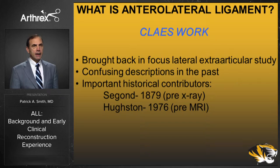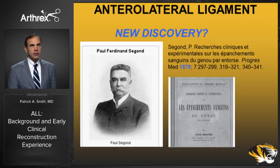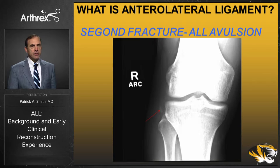First would be Segond in 1879 who described this same probable ligament before X-ray. Dr. Houston in 1976 talked about the lateral capsule ligament prior to MRI. Segond's original treatise described this band associated with a fracture off the lateral tibia — the so-called Segond fracture — which is seen with an ACL tear and most likely represents an avulsion of the ALL off the tibia.